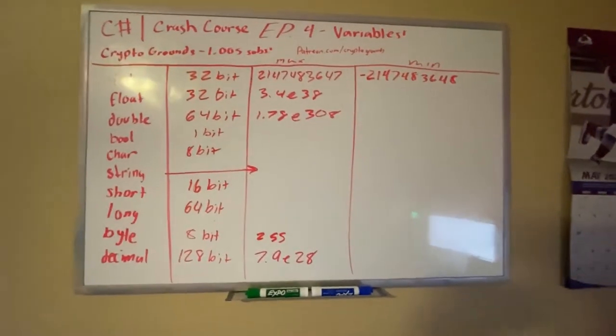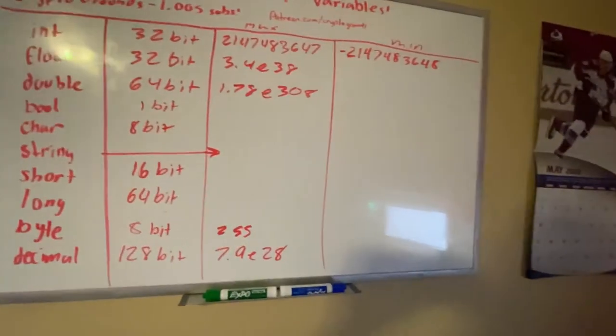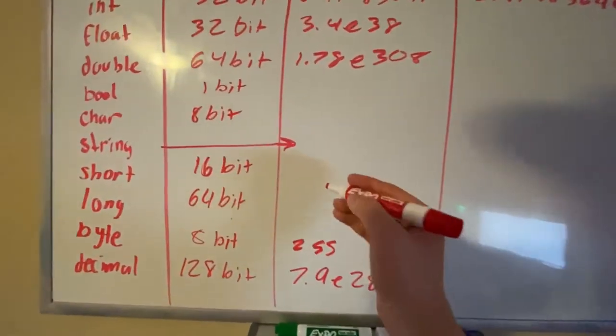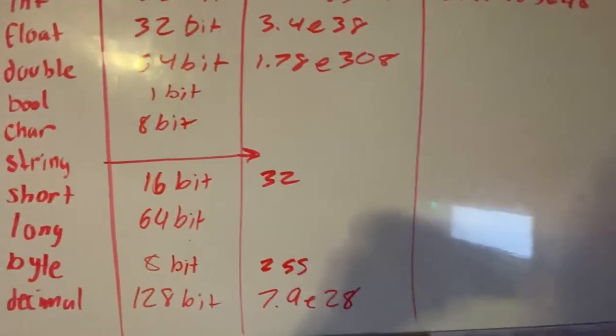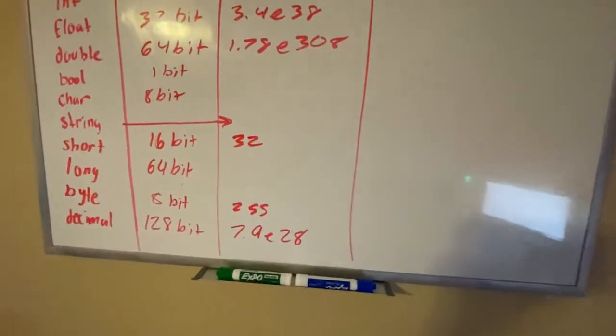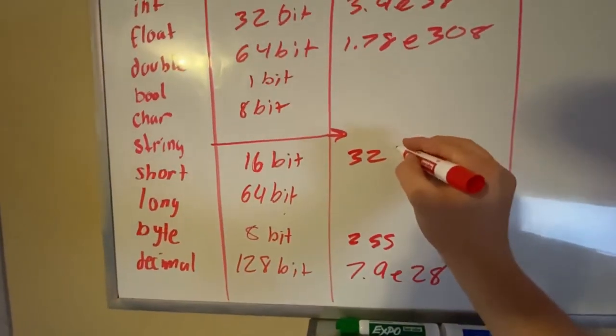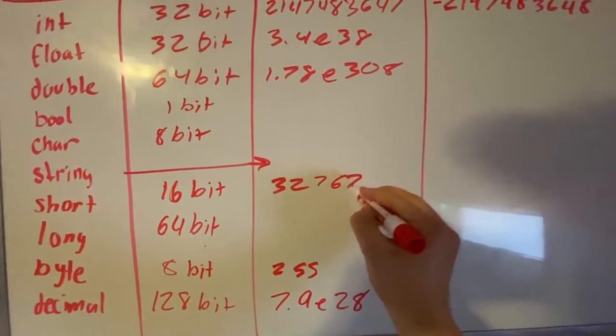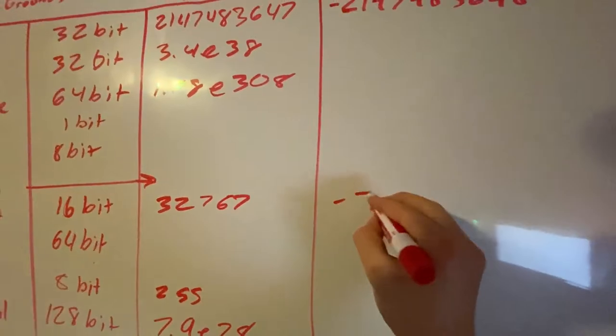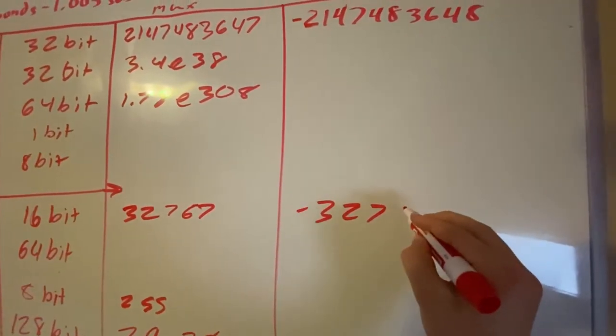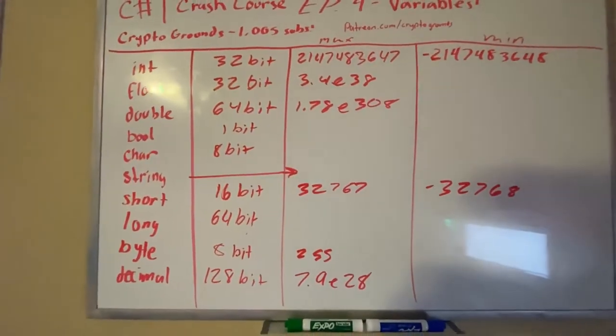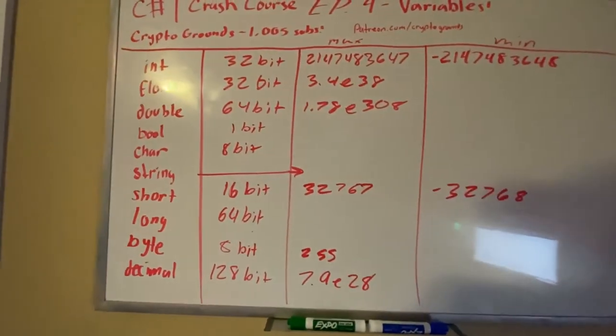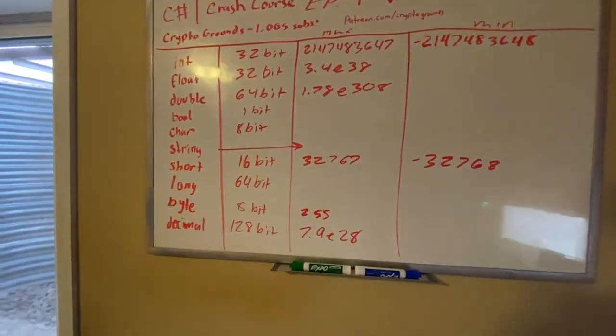Bool we don't need that, char we don't need that. Short, all right, so the maximum for this one is actually quite small: 32,767. And the min for this one is negative 32,768. So clearly it's smaller because it's 16-bit. Hopefully that kind of starts to make sense.